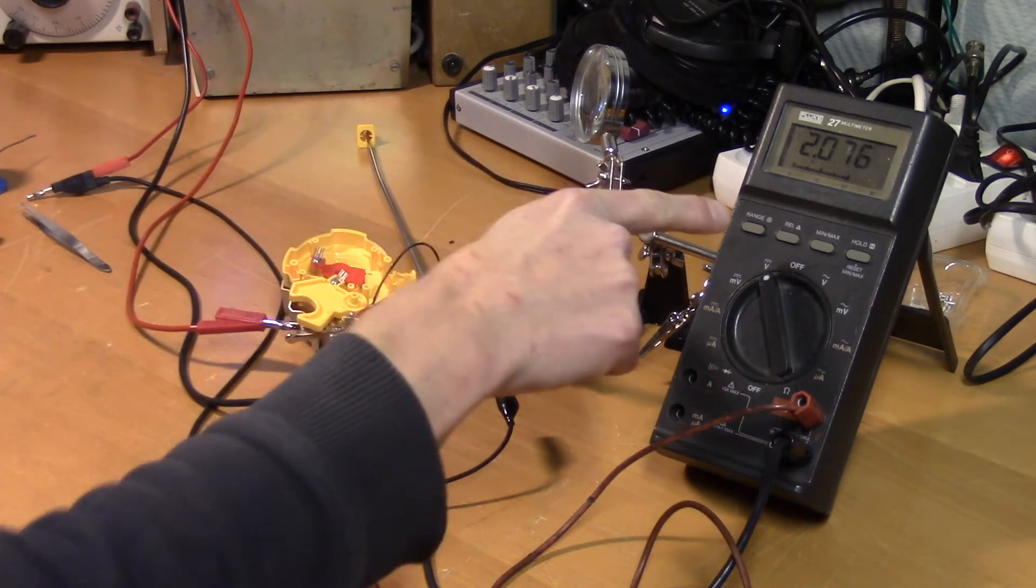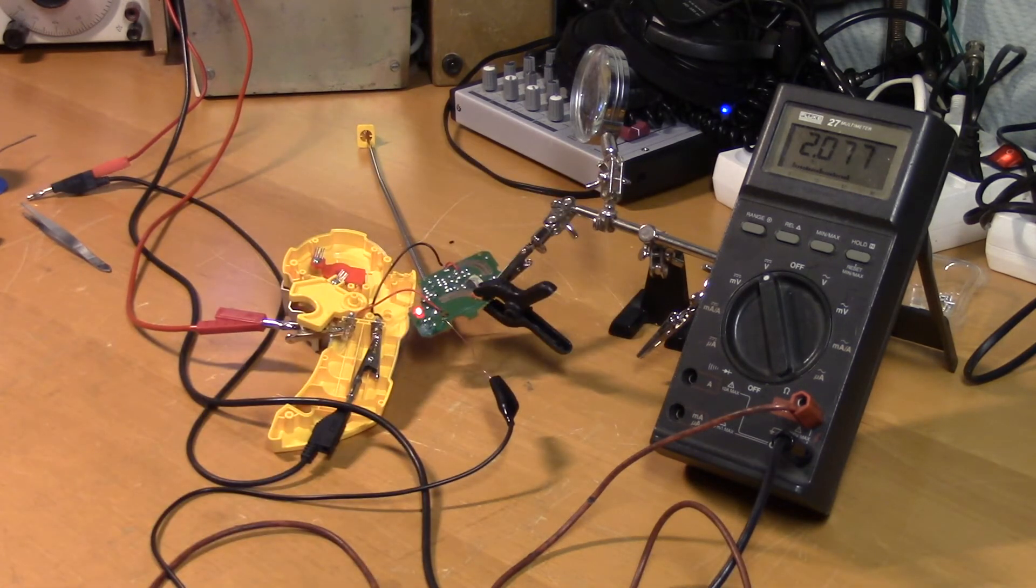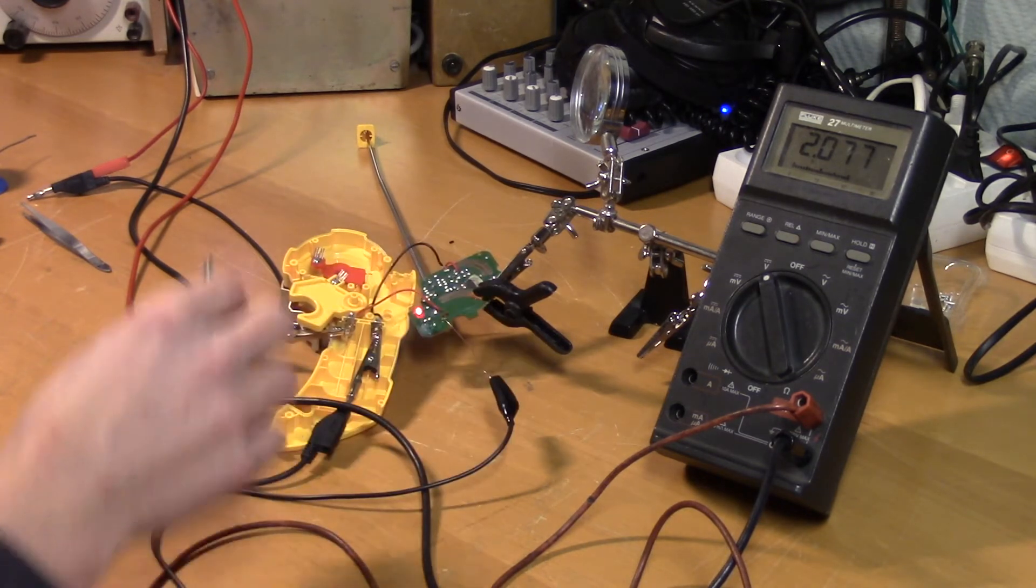So now I have 2.1 volts. I'm guessing that is some kind of internal operating voltage of the logic chip. So let's see what happens with that voltage when we short the diode.